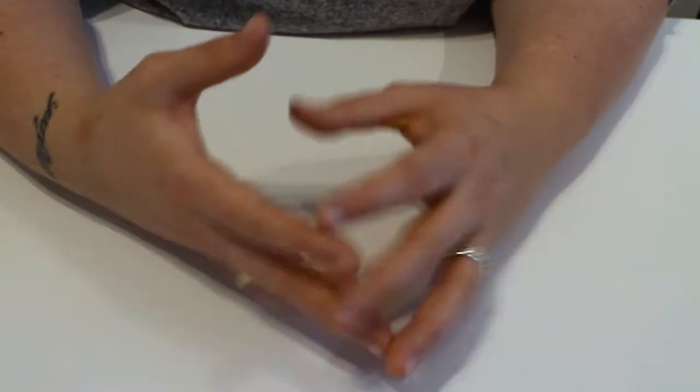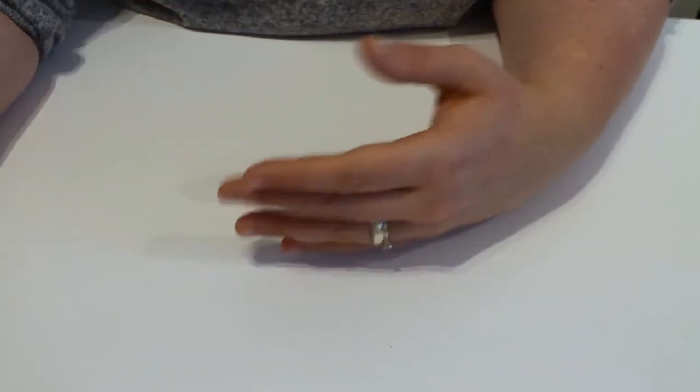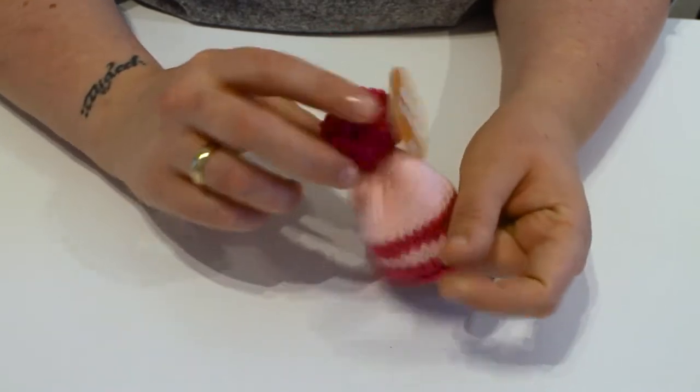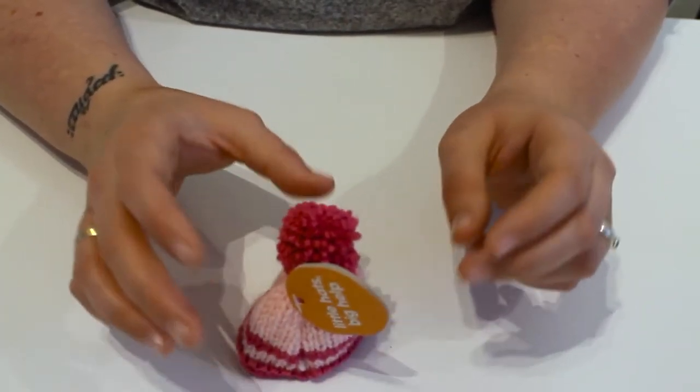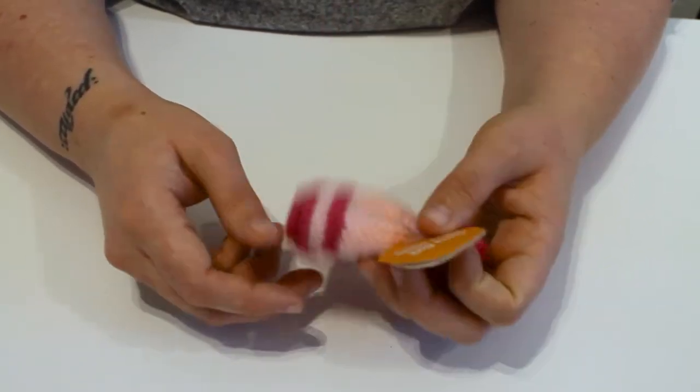If you don't know what the Big Knit is, it's a campaign run by Innocent Smoothies where you can send in hats, little hats like this, that they will put on their Innocent little smoothie bottles around this time of year. And every time you buy a bottle with a hat on it, 25p is donated towards Age UK.